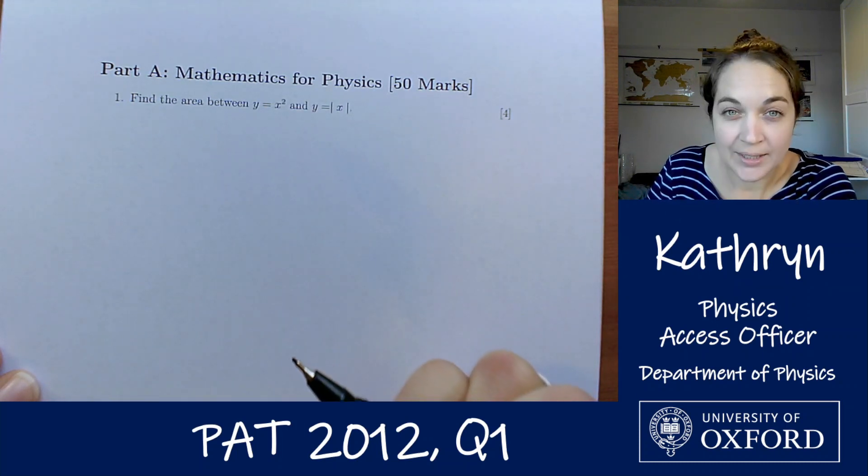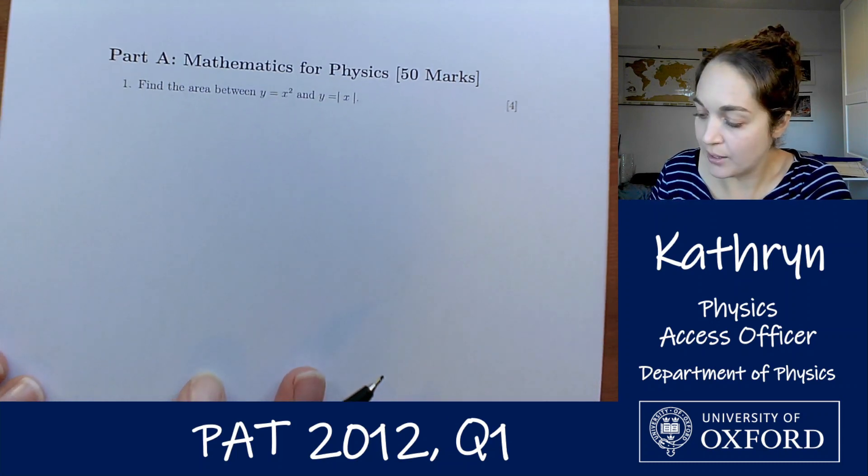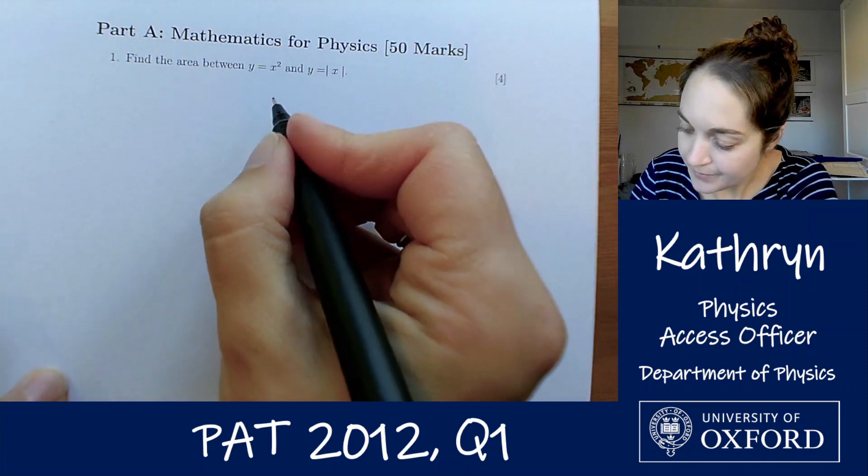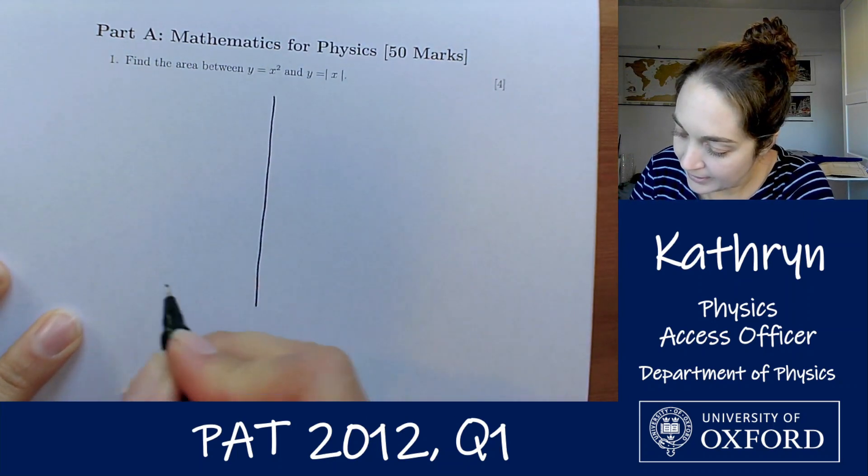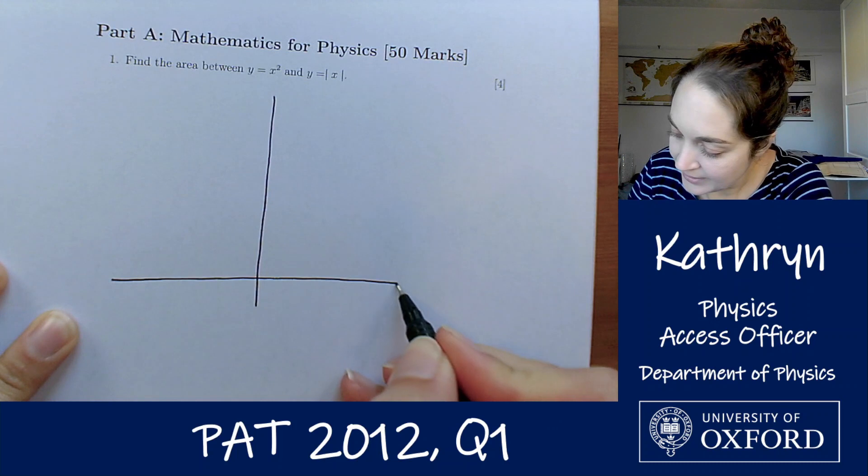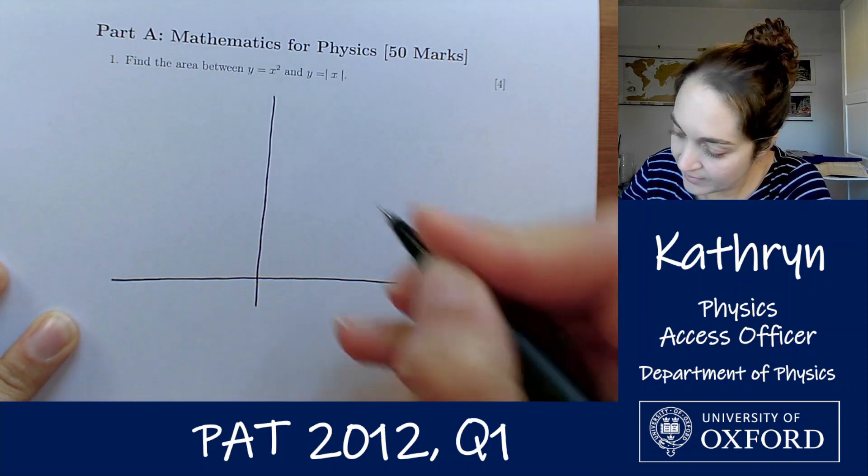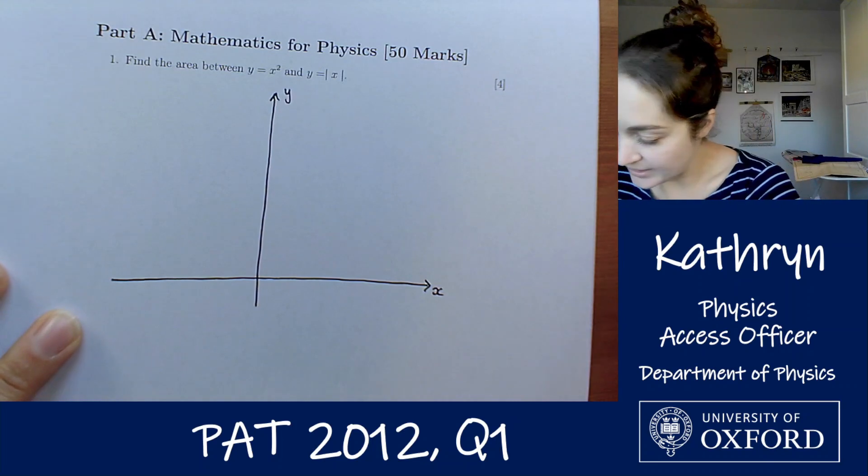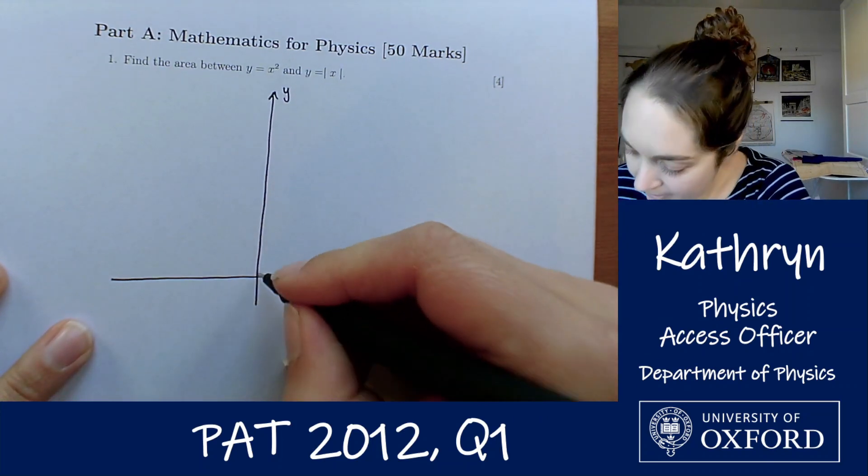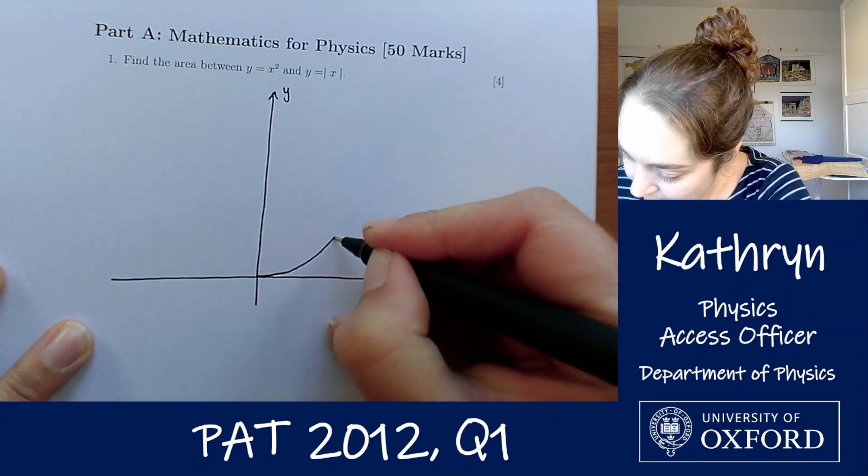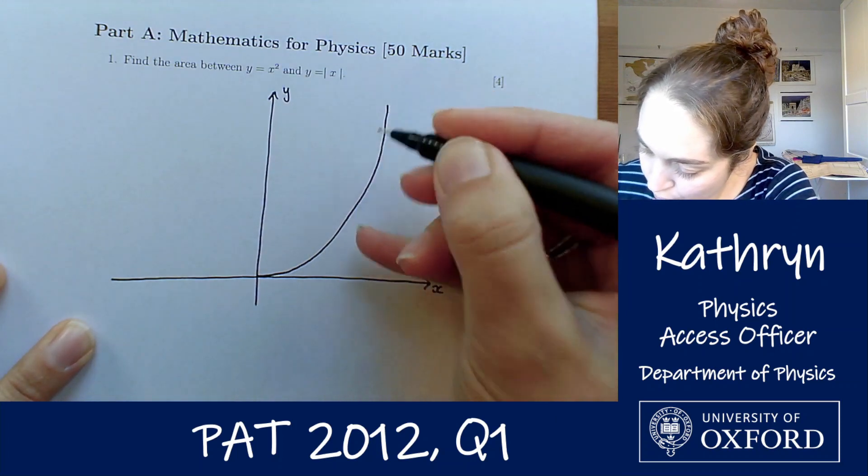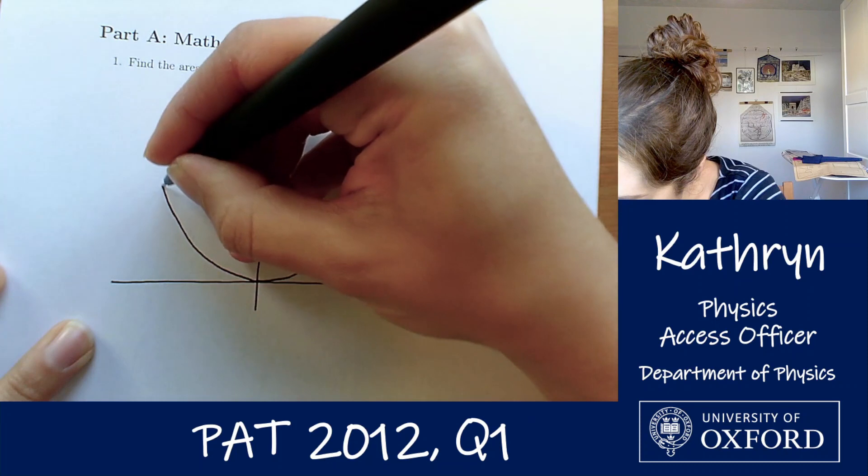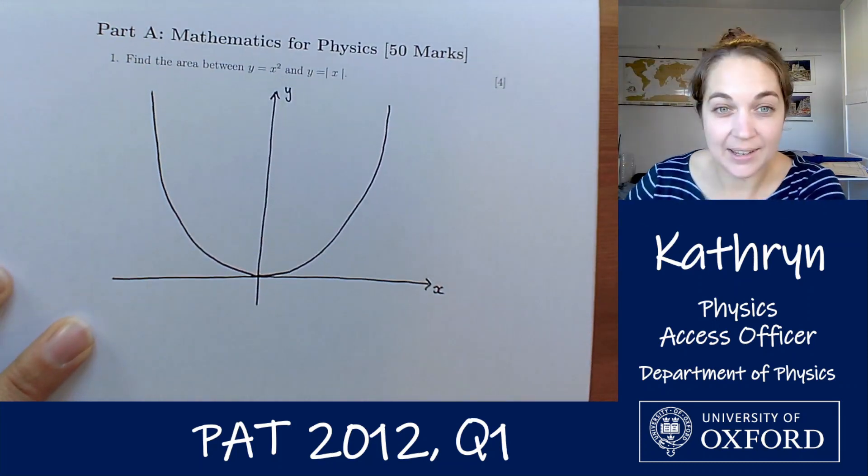So let's understand what's going on here by sketching these curves. So let's put some axes in here, so if that's x and that is y, our first curve is y equals x squared, so that's going to look, it's just going to be our normal quadratic through zero, something like that.